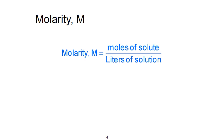Molarity is one of the most common expressions of concentration used in chemistry. It's defined as the ratio of moles of solute per liter of solution. The unit is often expressed as a capital M, and it's important to remember that this symbol simply stands for the ratio of moles of solute per liter of solution.